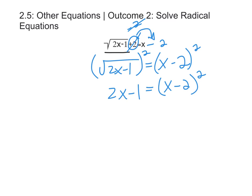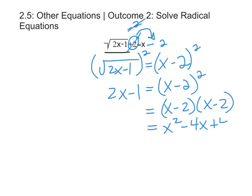Our next step is to expand x minus 2 all squared. We're going to use FOIL here — x minus 2 times x minus 2 — to get the expanded version. We get x squared minus 4x plus 4, which equals 2x minus 1. Our next step is to bring 2x minus 1 over to the right hand side to make the whole equation equal to 0, by adding 1 and subtracting 2x from both sides.